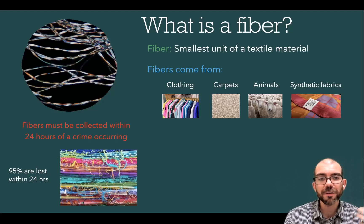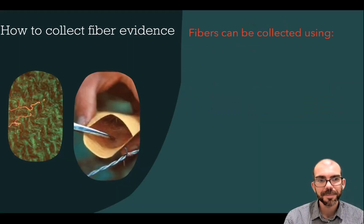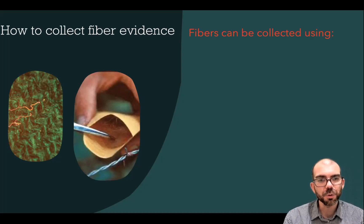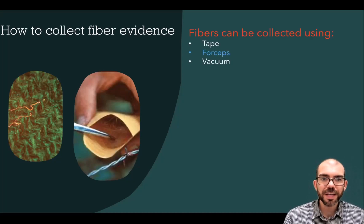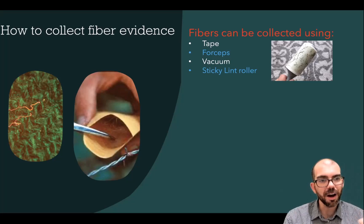Fibers are very small, very fragile, and they transport and move very rapidly. Should you encounter a fiber at the crime scene, it can be collected using a variety of tools such as tape, forceps, a vacuum, and even a sticky lint roller. When using a sticky lint roller, just be sure to cut off the piece that contains the fiber and properly seal it.